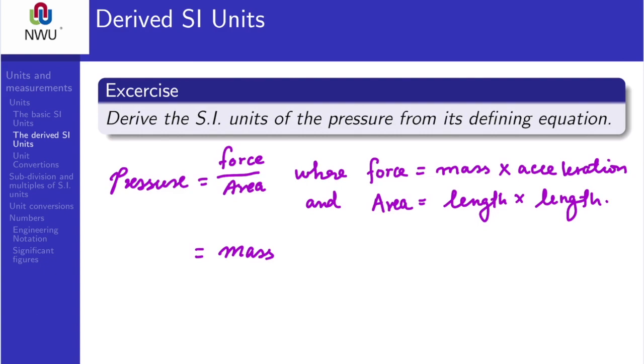And we can also write area as the length times length or length squared. Therefore, substituting those two with the pressure equation, we get P equal to mass times acceleration divided by length times length.